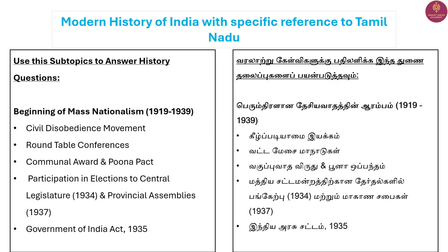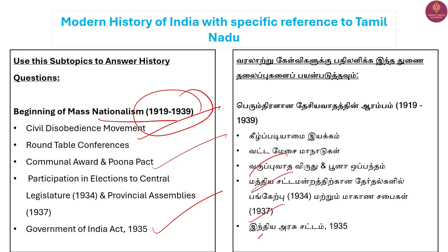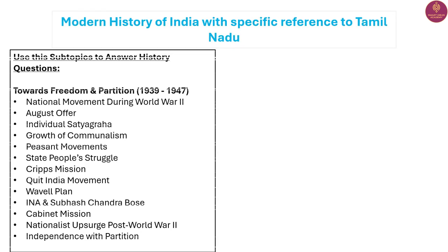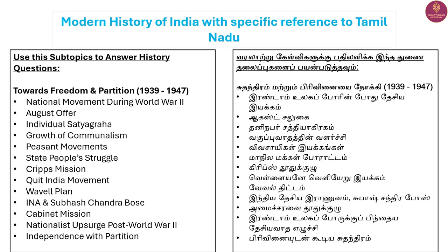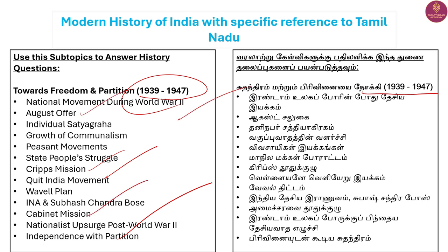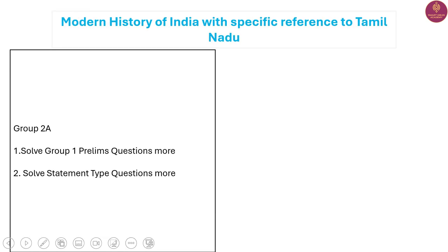This is the Mass Nationalism phase, 1919 to 1939: Civil Disobedience Movement, Government of India Act, and the Poona Pact. Then in 1939 to 1947: the Cripps Mission, Partition, Cabinet Mission, August Offer, and World War II. You will learn about all of these events in this period.